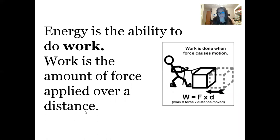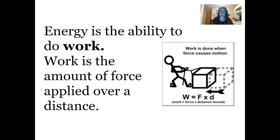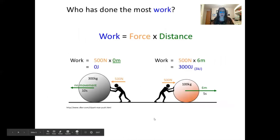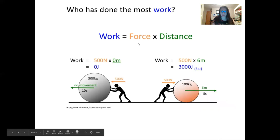We talked about forces the last couple of weeks. We can calculate the amount of work on an object by multiplying the amount of force in newtons times the distance that object moves. Force times distance gives you the amount of work done — and energy is that ability to do work, so you can actually calculate the amount of energy in any object. This equation between force and distance multiplied together equals work.